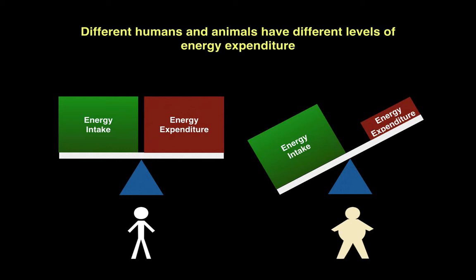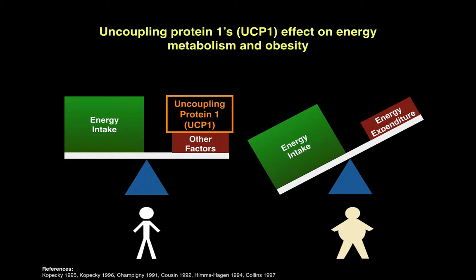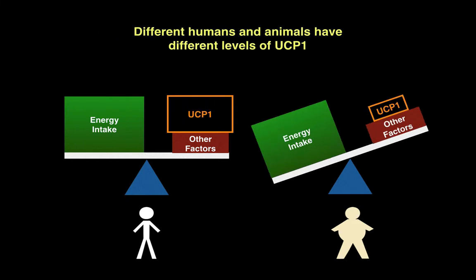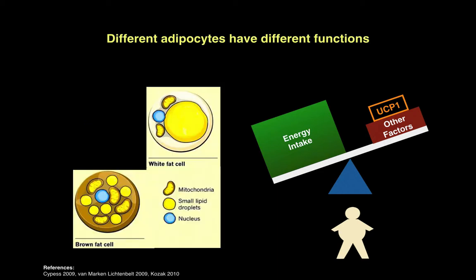Interestingly, different humans and animals have different levels of energy expenditure. This is seen whenever two humans eat the same amount of food, but one becomes obese and one stays at a normal healthy weight because they have different levels of energy expenditure. So the question is, what is causing this variation in energy expenditure? One answer to this is uncoupling protein 1, also known as UCP1. Numerous studies have shown that UCP1 induction leads to increased weight loss because it increases energy expenditure. But different humans and animals also have different expressions of UCP1, which modifies our question to: what is causing these different levels of UCP1 expression?